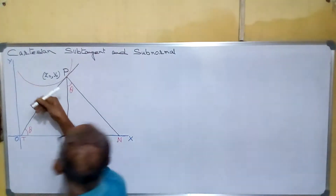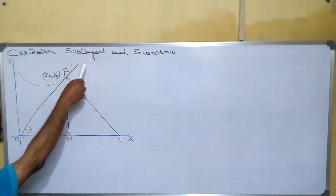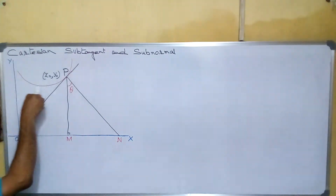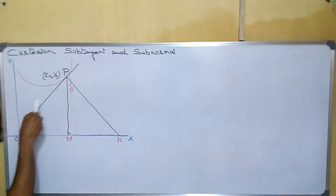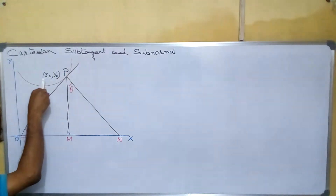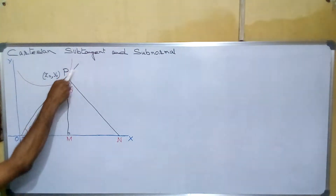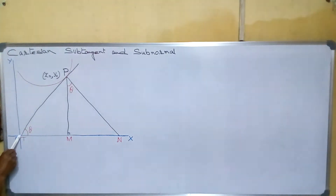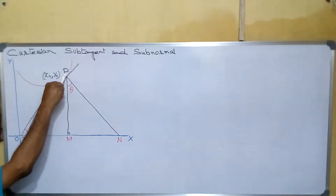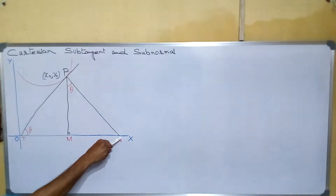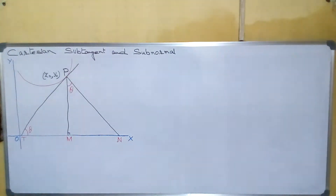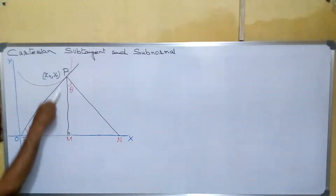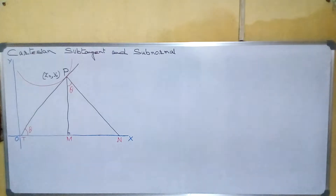Welcome. I will show you what is called Cartesian sub-tangent and sub-normal. Let us read this graph, and at point P(x₀, y₀) we are drawing a tangent which cuts the x-axis at T, and a normal which intersects the x-axis at N, and from P we are drawing a perpendicular PM on the x-axis.